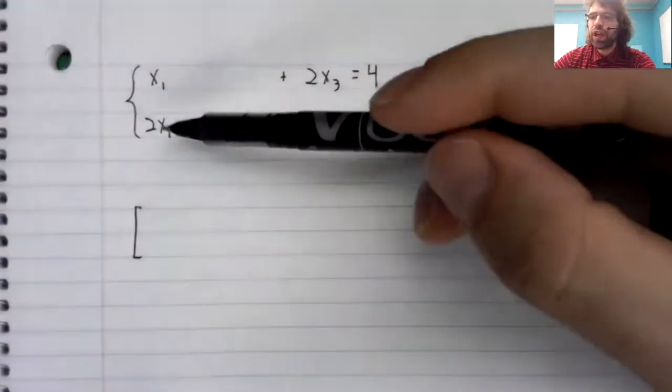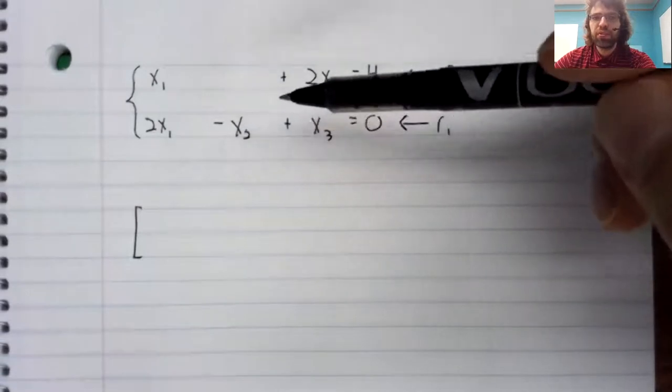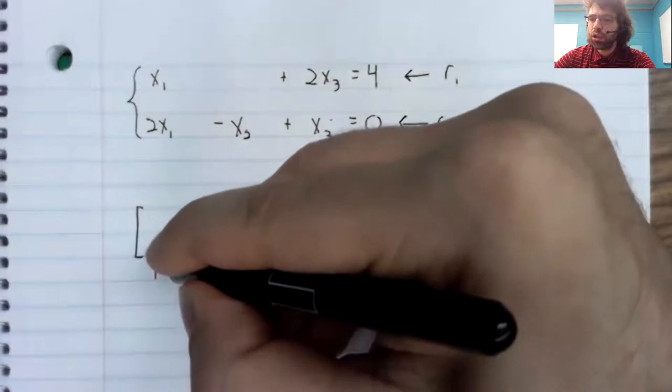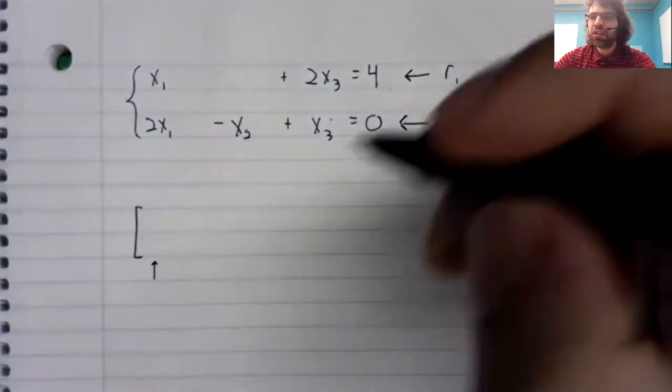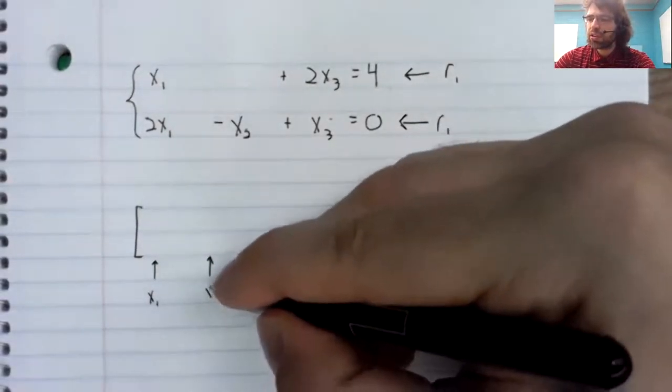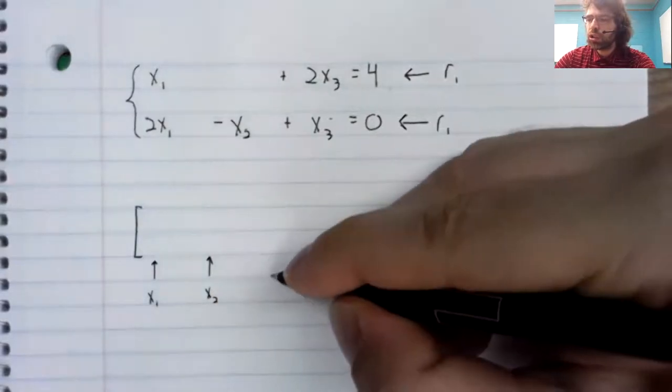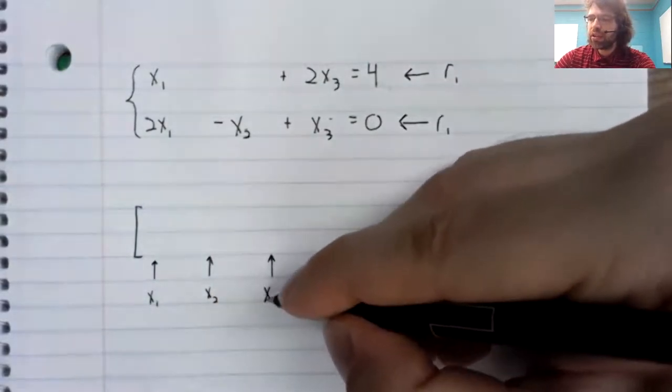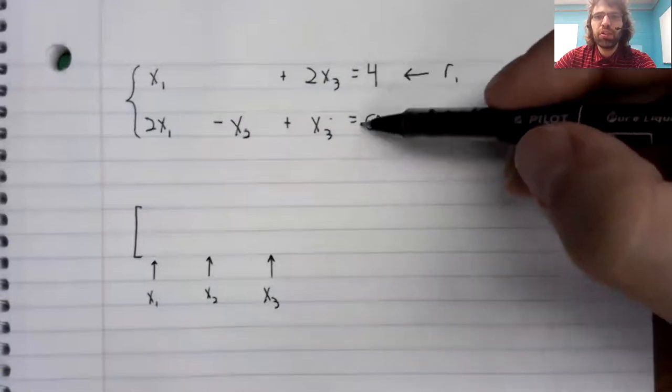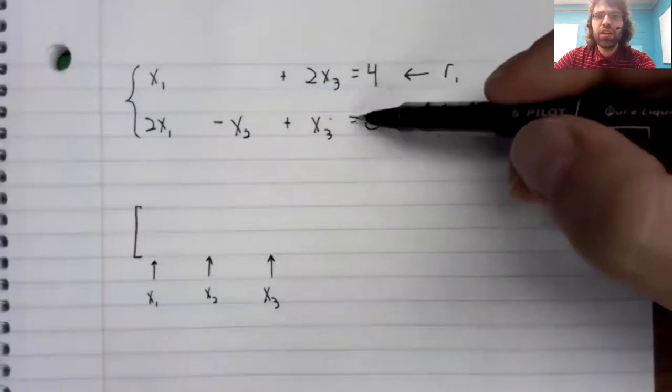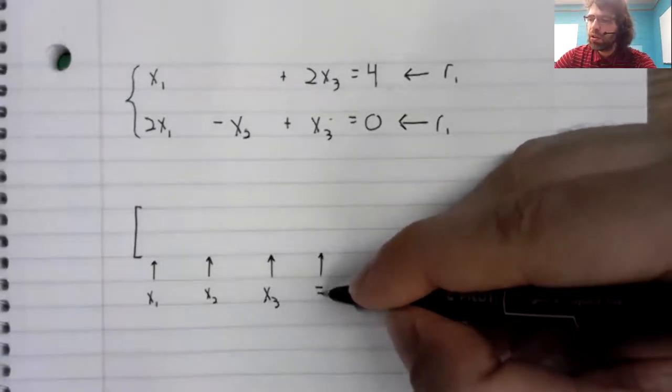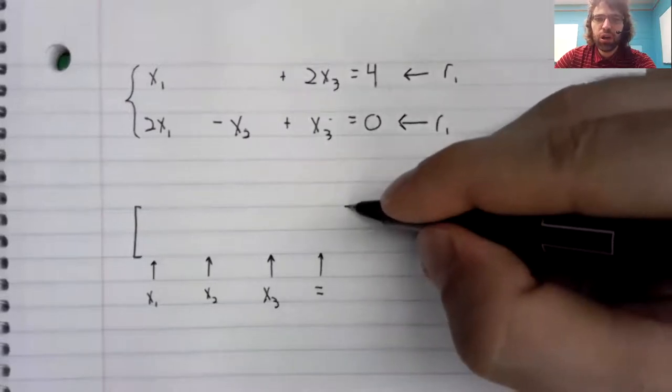Each variable in the system is going to correspond to a column. So we have an x1 column, an x2 column, an x3 column, and one additional column. These numbers over to the right of the equal sign will give us a fourth column.